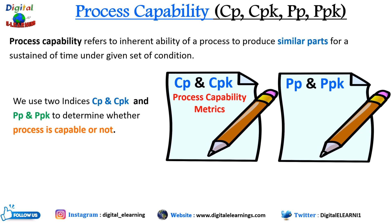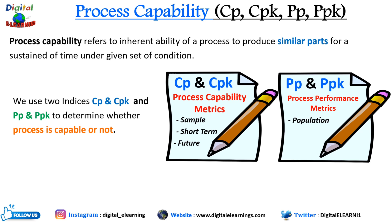Cp and cpk are called process capability metrics, while pp and ppk are called process performance metrics. In both cases, we want to verify if the process can meet the customer requirement, which is the CTQ. Process capability — cp and cpk — uses samples for evaluation, is generally short-term, and tells us how the process will perform in the future. Pp and ppk use the population, are generally long-term, and tell us how the process has performed in the past.